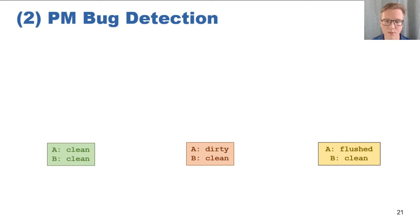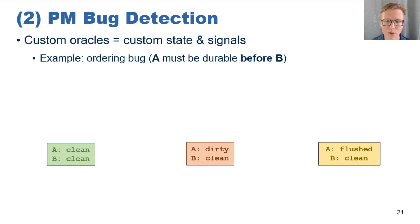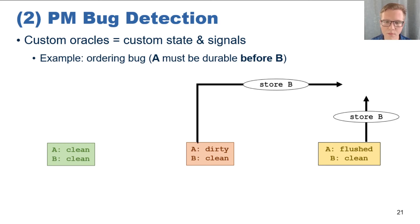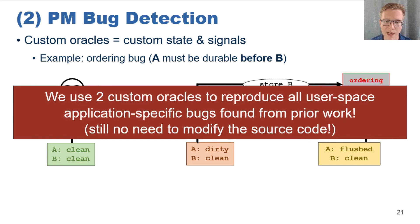There are still application-specific bugs that we would like to detect. To enable this, we allow developers to easily encode custom signals and states into this state machine model of persistent memory. For example, if we have two data structures and A must be made durable before B, modifying A works as before — A becomes clean, dirty, or flushed. However, we have new state transition signals when B is modified while A is not clean. If A is dirty or flushed, this indicates an ordering violation because A has not been properly made durable before B. We ultimately use this API to accurately detect all of the user-space persistency bugs reported by PMTest and XFDetector by building two such custom bug oracles.